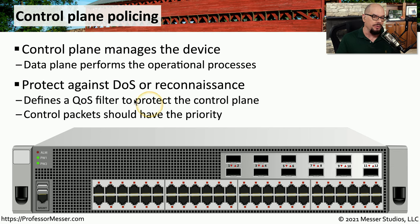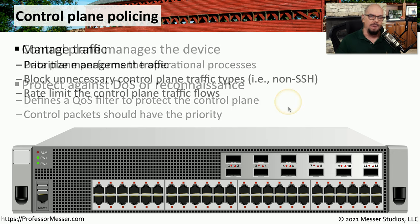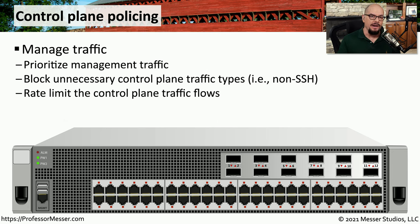We need to make sure that we're protected against denial of service or someone performing reconnaissance. We also might want to configure quality of service on our network so that management traffic to the control plane has priority over any other types of traffic. We could also do some firewalling so that not only are we prioritizing the management traffic, we're also blocking any non-management traffic.